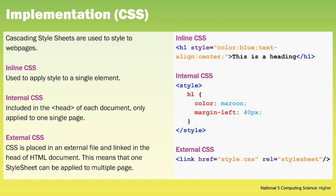Now moving on to cascading style sheets. At Higher you'll use a combination of all three style sheets — inline, internal and external. When we run the web page all the style sheets will cascade into a virtual style sheet, with inline styles getting priority, then internal, and lastly external.